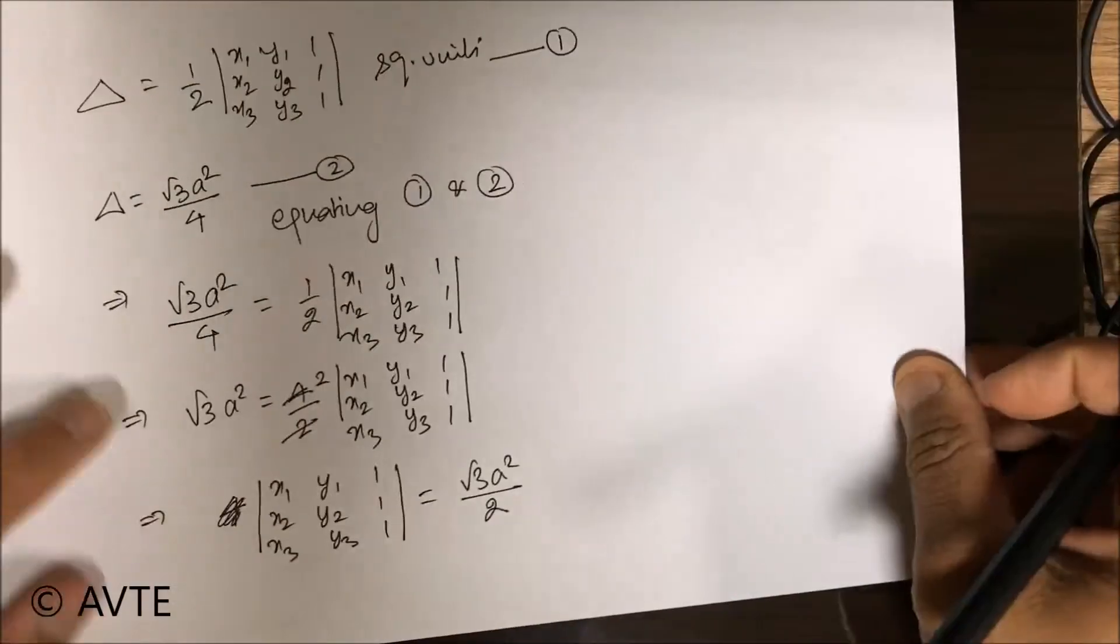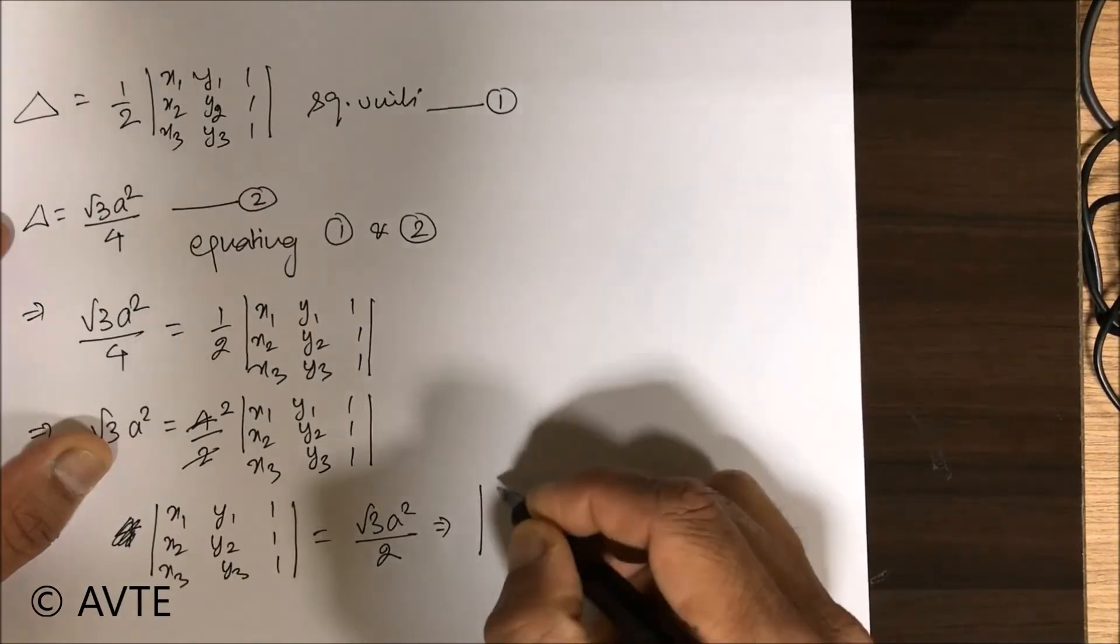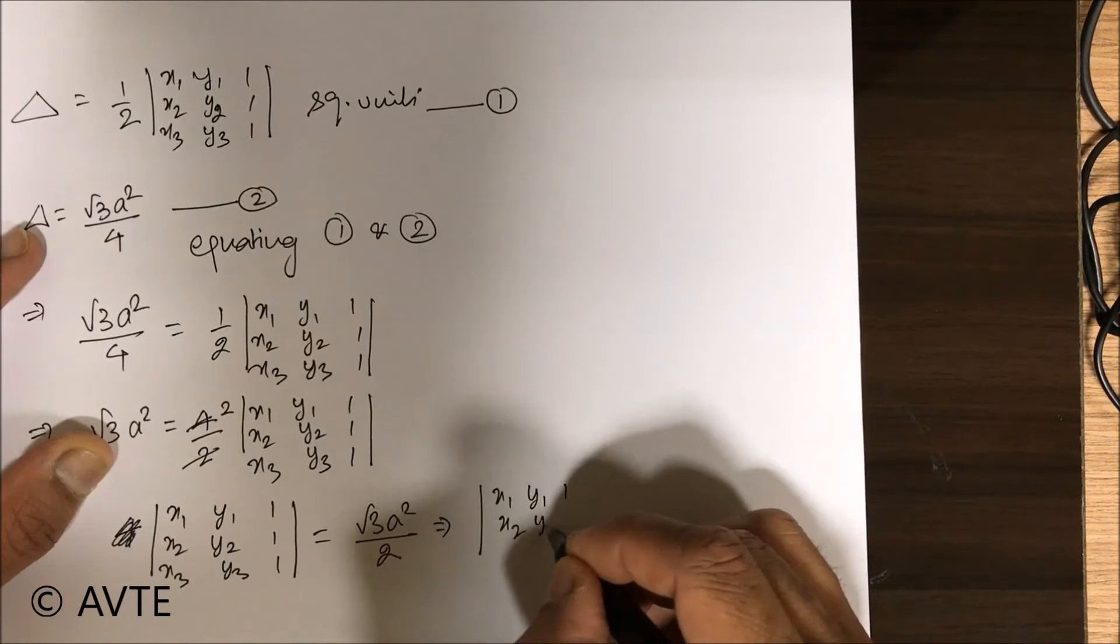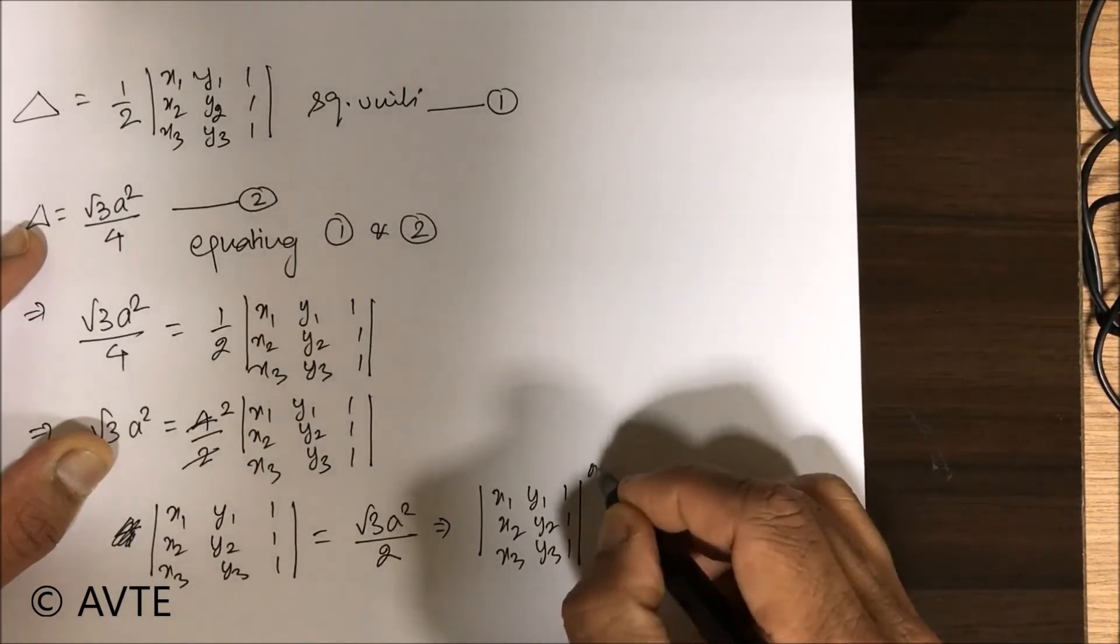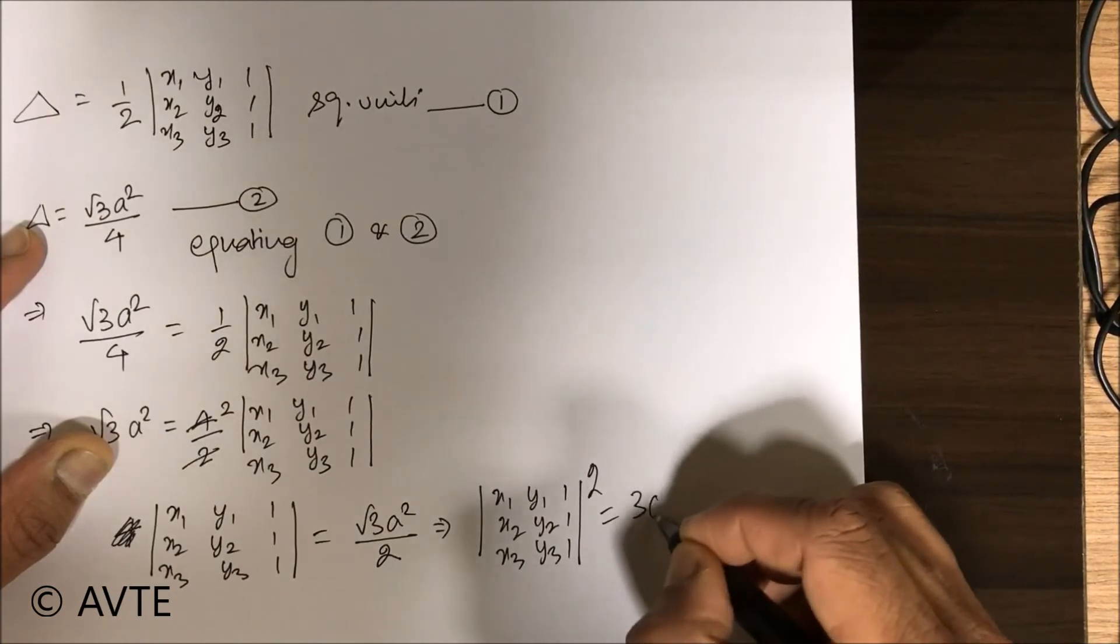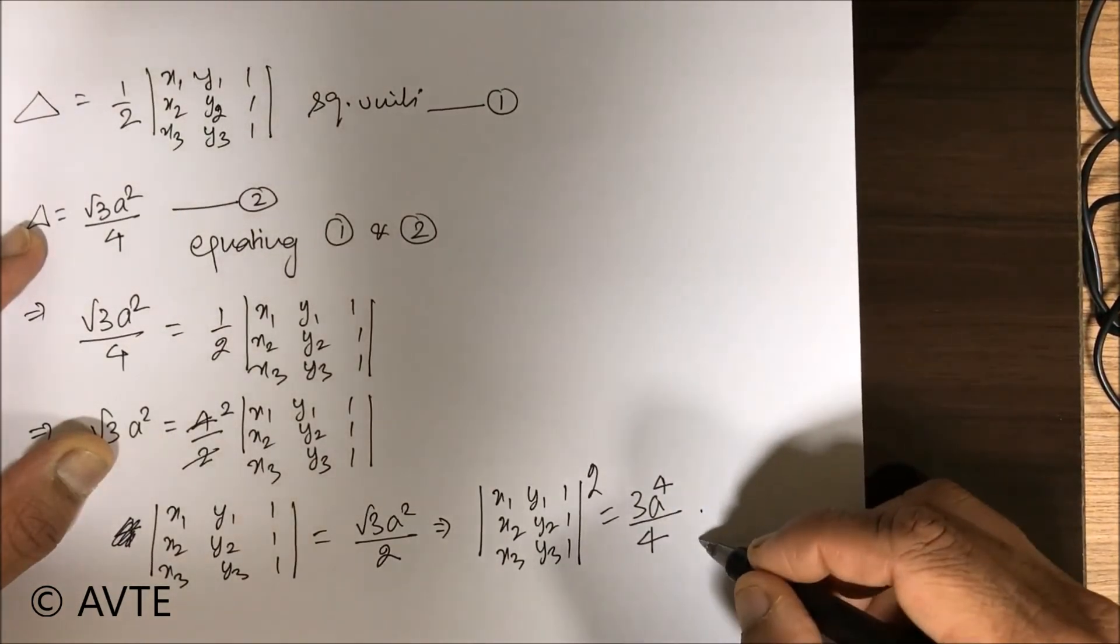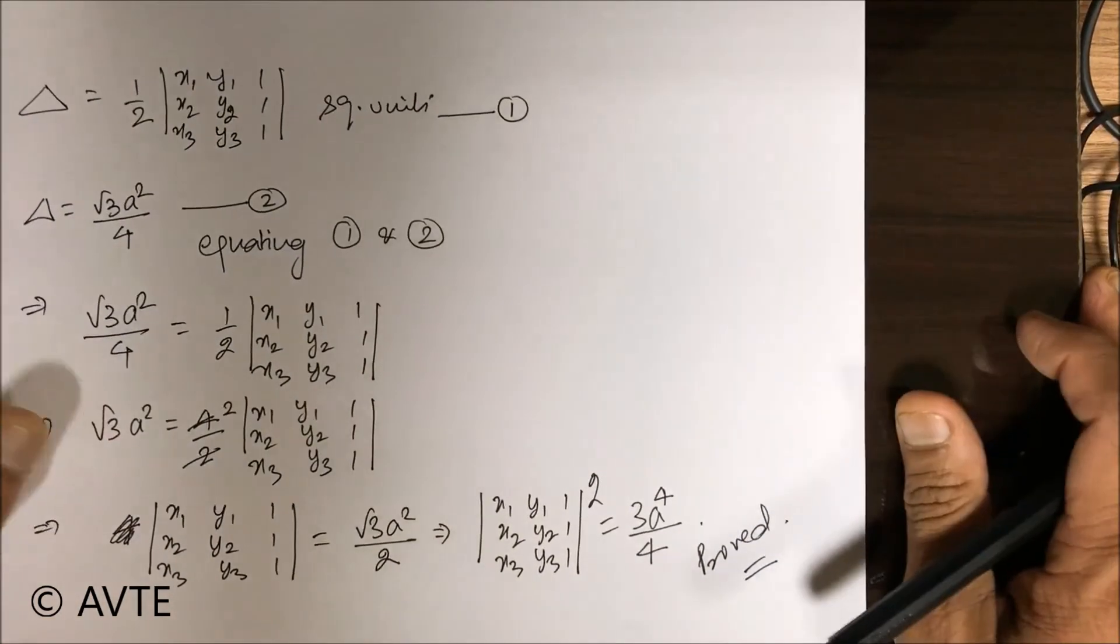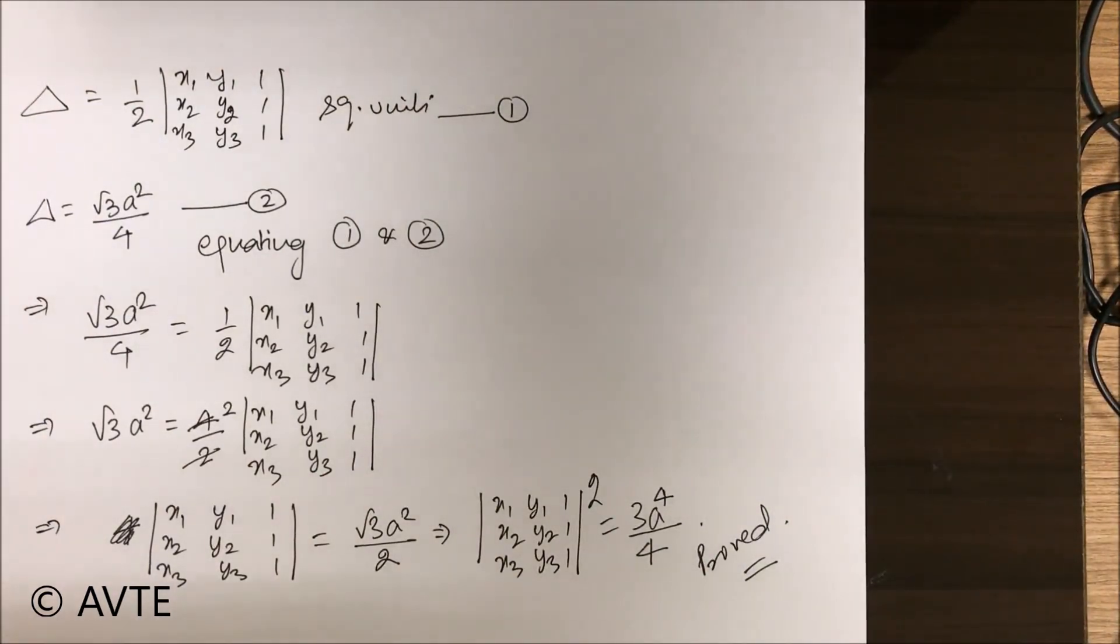And by squaring both the sides we can get the desired result. This is what we have proved. So it's quite easily done - the target is to equate two areas and then do squaring.